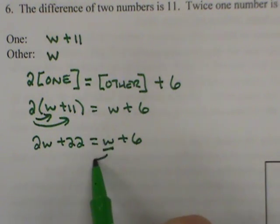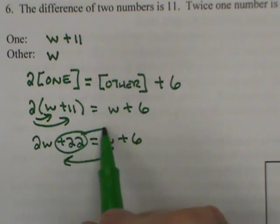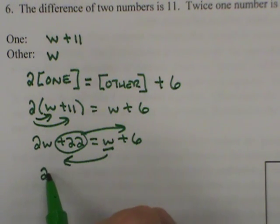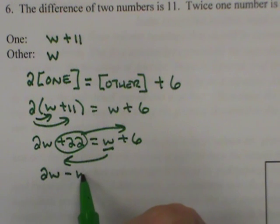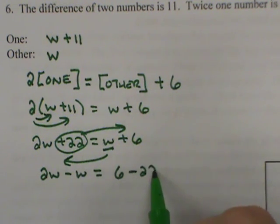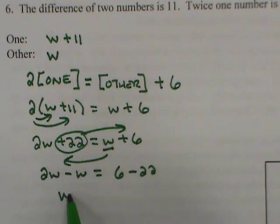I think I'll move this W to the left and the 22 to the right, being sure to change the signs of everything that you move. So I'll say two W minus W equals six minus 22. Two W take away a W is W, and six take away 22 is negative 16.